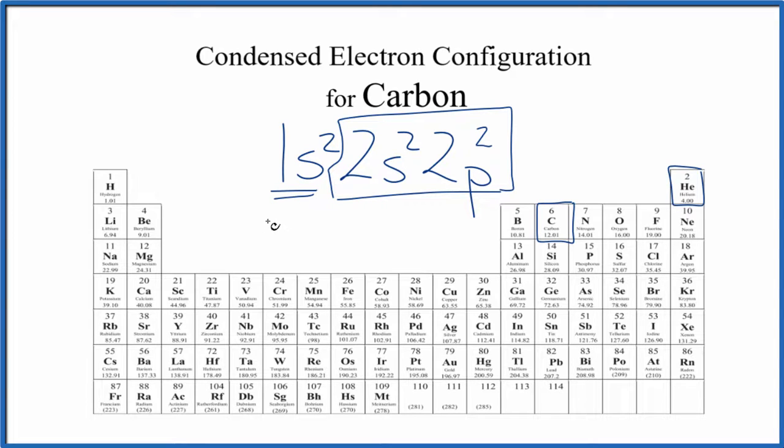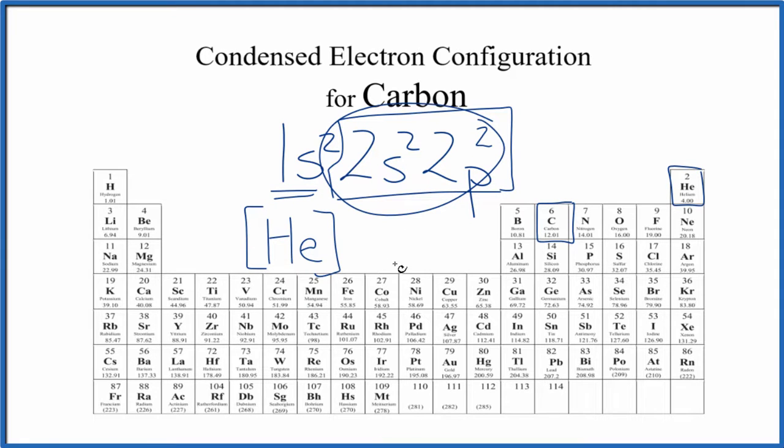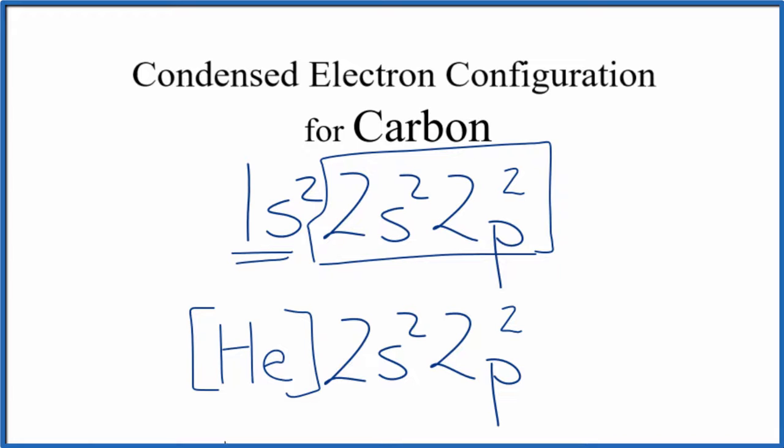So instead of 1s2, we're going to write He. I'm going to put it in brackets, and then we'll bring this part here down like this. So this is the condensed electron configuration for carbon.